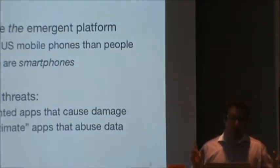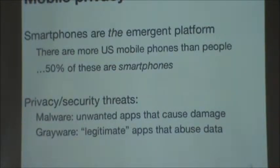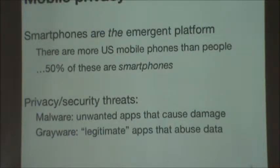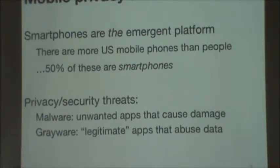Moving forward to mobile privacy and security — why is this interesting? We're at a point in computing where most people have smartphones; they're the main platform that a lot of people use, and smartphone adoption is only going to increase. 50% of phones in the U.S. are smartphones that can run third-party apps. Previously with desktop computing, many people only needed it for a few things like checking email or browsing the web, and that's why smartphones have filled that niche. But we have a lot of privacy and security threats similar to those on desktop platforms because you can execute third-party apps on them.